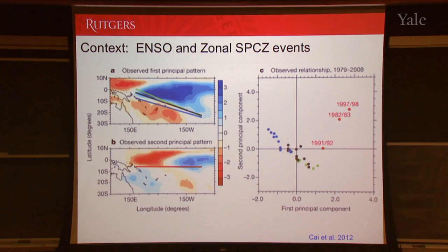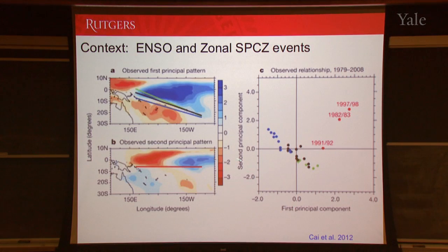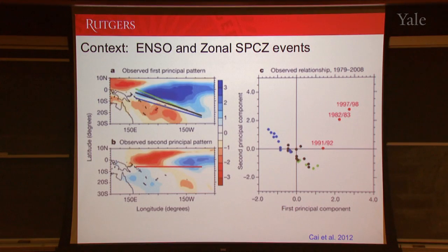A lot of people have looked at the SPCZ in the context of the El Niño Southern Oscillation. Work by people like Chris Fallon has shown how the axis of the SPCZ varies in response to El Niño conditions — during El Niño events it tends to be shifted closer to the equator, during La Niña or ENSO cool-phase conditions it shifts in the opposite direction. A 2012 study by Wenju Cai et al. documented an extreme case in which the SPCZ essentially becomes zonal — the convection collapses and merges with the ITCZ. These zonal SPCZ events are very significant for the climate of the South Pacific, basically replacing a double convection zone with a single convection zone.